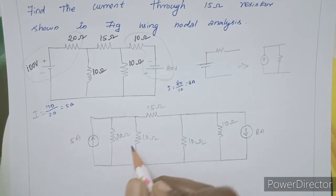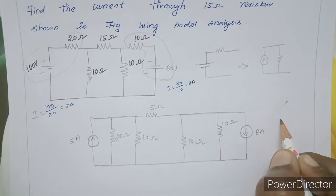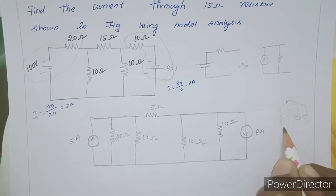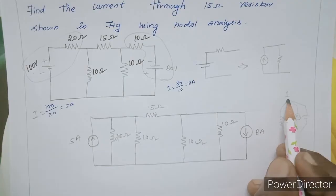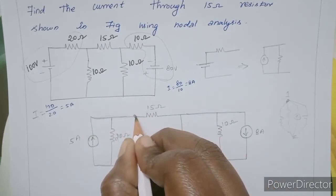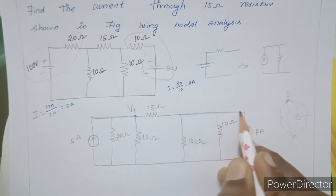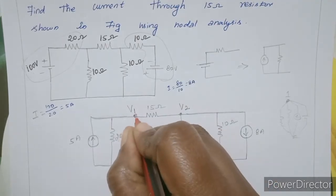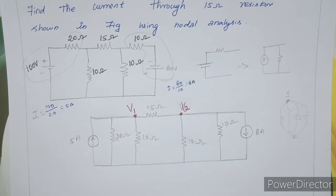Now we count how many nodes the circuit has. We connect through any node, any point, any branch — whether there is a current source or voltage source. We identify Node 1 with voltage V1 and Node 2 with voltage V2. So there are two nodes: V1 and V2.